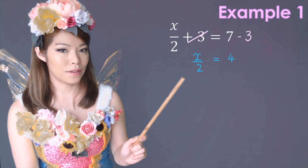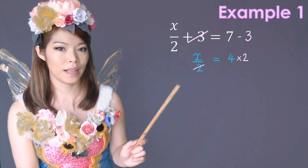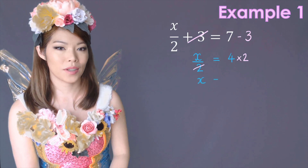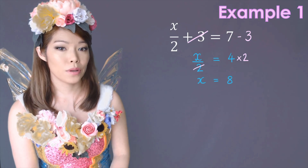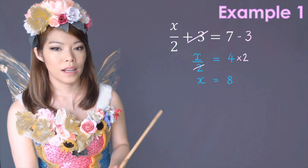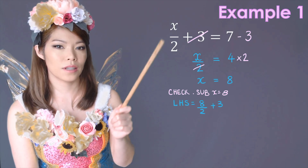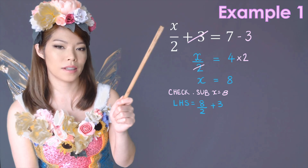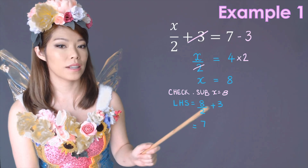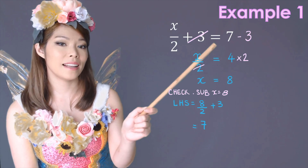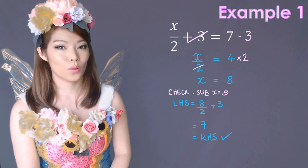Now the inverse of dividing by 2 is multiplying by 2. So now we have x equals 8. Don't forget step number 2 is to substitute and check our answer. So we're going to look at the left side and let x equal 8. So we have 8 over 2, which is 4. 4 plus 3 is 7, and that is equal to the right-hand side. So we are correct.